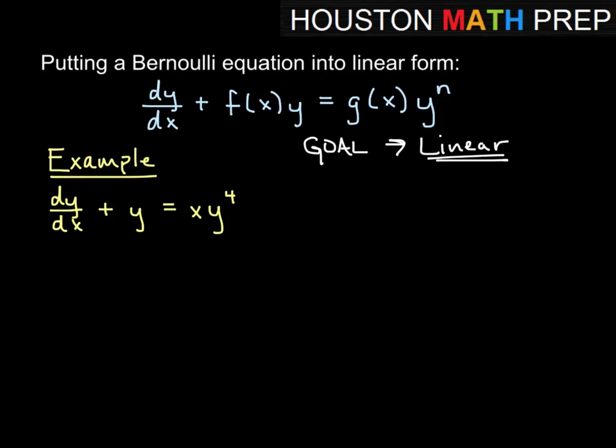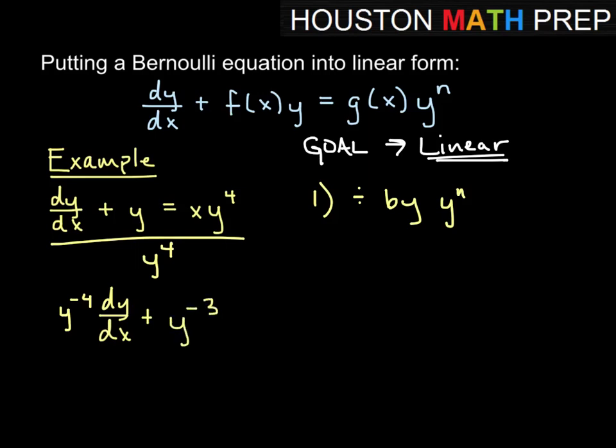So here our example, we have dy/dx plus y equals x times y to the 4th. So what we're going to simply do is divide out that y to the n. So our first step, we're going to divide everything by our y to the n that's on the right-hand side here. So we'll divide everything by y to the 4. Doing that will leave us, I'm going to go ahead and write this as y to the minus 4 dy/dx plus, and then this becomes y to the minus 3 equals x.